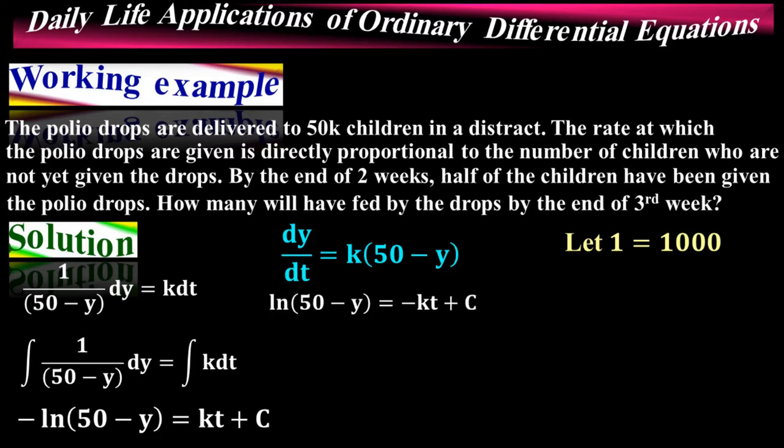C is an arbitrary constant. Multiplying both sides by minus gives: ln|50 − y| = −kt + C. You might wonder why we still write +C after multiplying by minus — but since C is an arbitrary constant, it doesn't matter whether we change its sign or scale it by any nonzero number. It remains an arbitrary constant, so we just write +C.